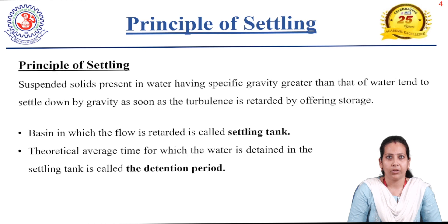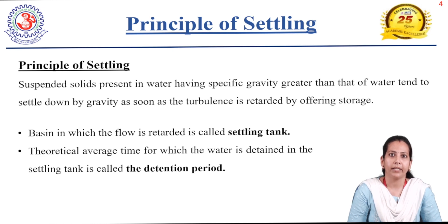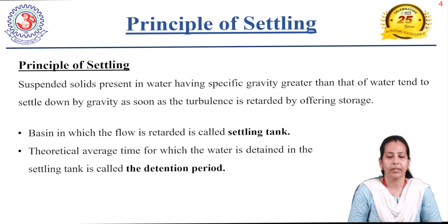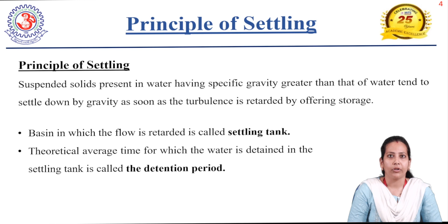The basic principle of settling is that suspended particles or impurities in suspension tend to settle down at the bottom of the tank, because those particles have a specific gravity greater than water, and they settle by gravity as soon as turbulence is retarded. The tank in which flow is retarded is called the settling tank. The theoretical average time for which water is detained in the settling tank is called the detention period.